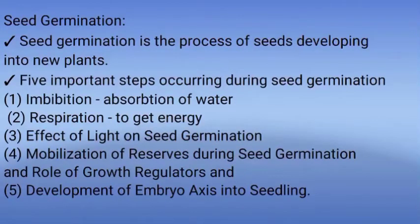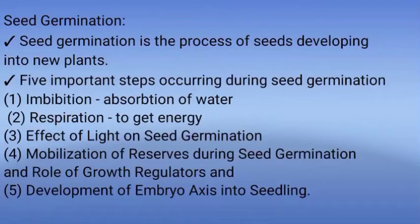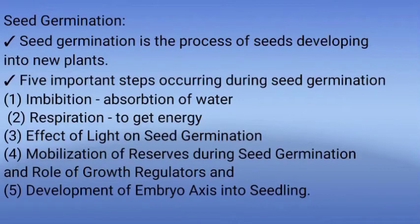Seed germination is the process of seeds developing into new plants. There are five important steps involved in seed germination: first, imbibition — seeds absorb water; second, seeds perform respiration to get energy for the germination process; third, effect of light on seed germination; fourth, mobilization of reserves during seed germination.